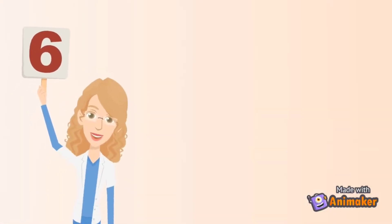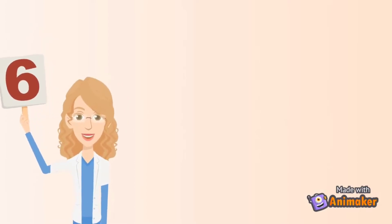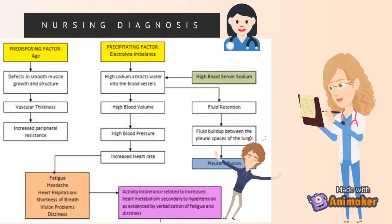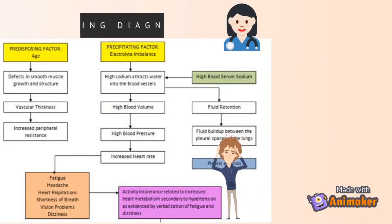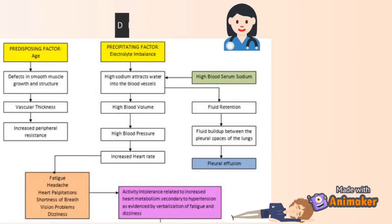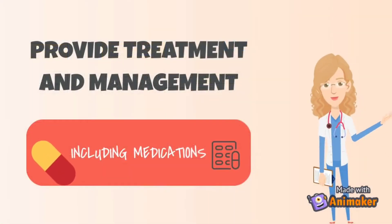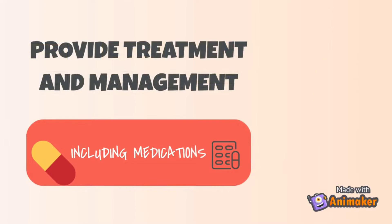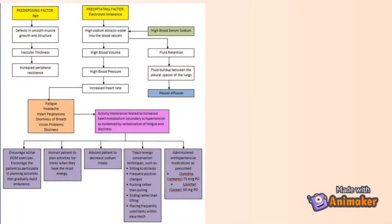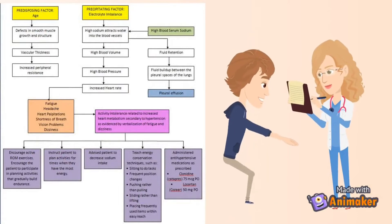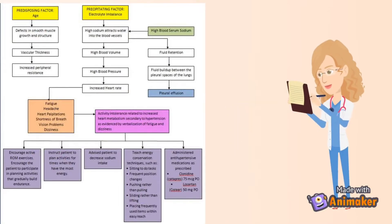Next, establish a nursing diagnosis. For example: activity intolerance related to increased heart metabolism secondary to hypertension, as evidenced by verbalization of fatigue and dizziness. At the end of the diagram, provide treatment and management, which may include medications — such as encouraging active range of motion exercises or encouraging the patient to participate in activities that gradually build endurance.